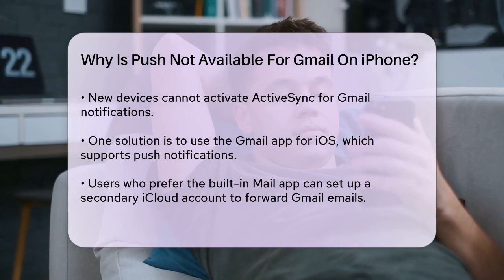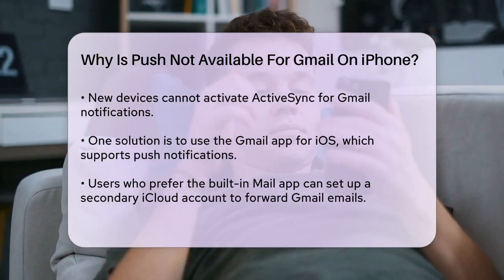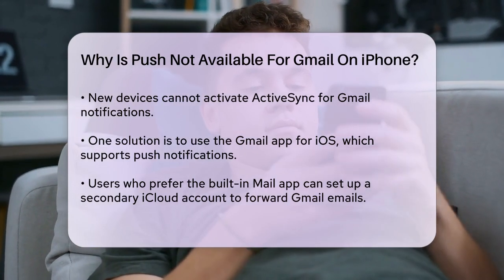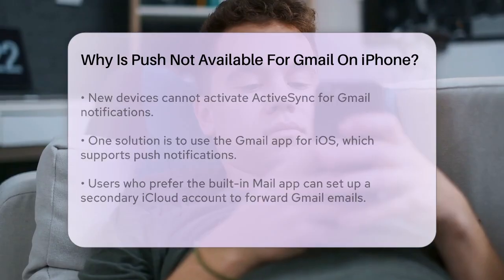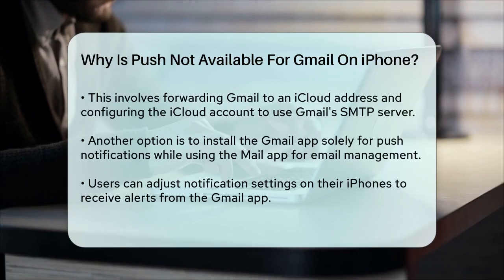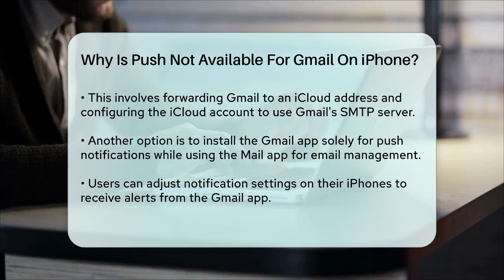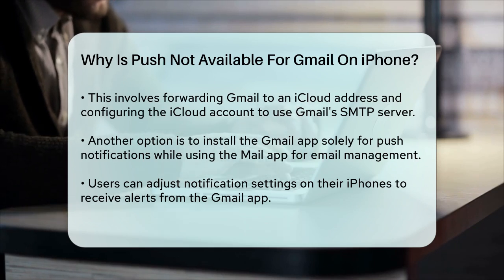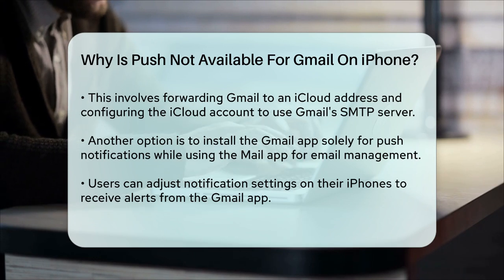Another workaround involves installing the Gmail app on your iPhone but not using it for sending or receiving emails. Instead, you use it solely for its push notification feature. You set the Gmail app to notify you of all new mail and then configure your iPhone's notification settings accordingly. This way, you get push notifications through the Gmail app while still using the built-in Mail app for reading and managing your emails.